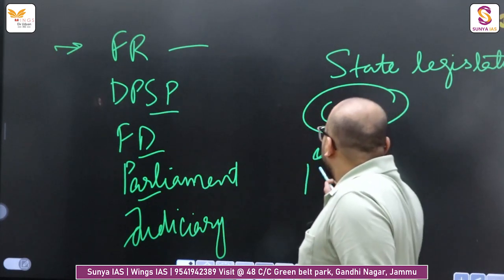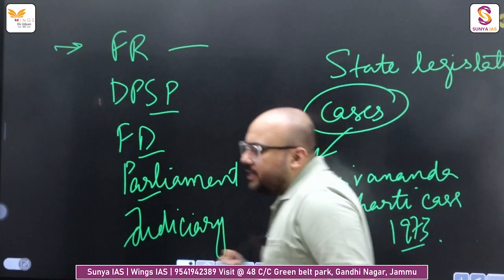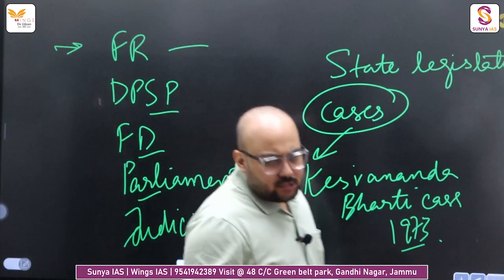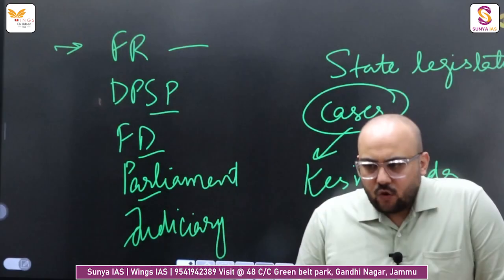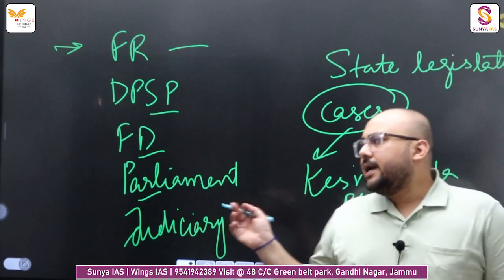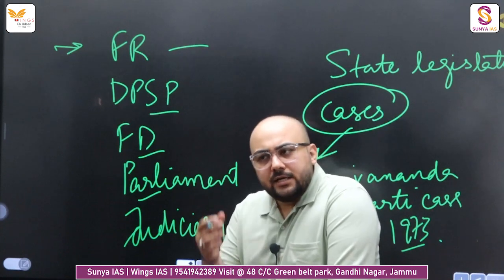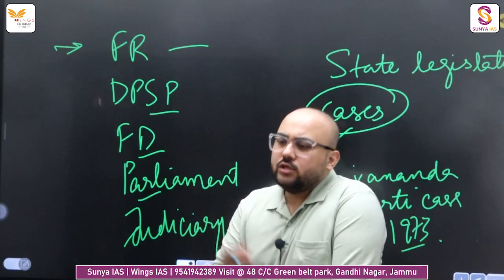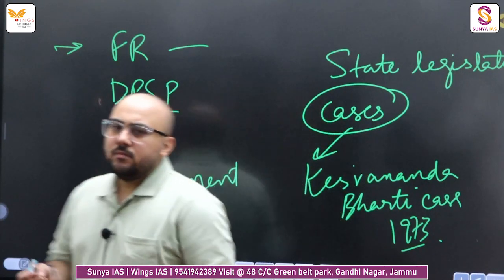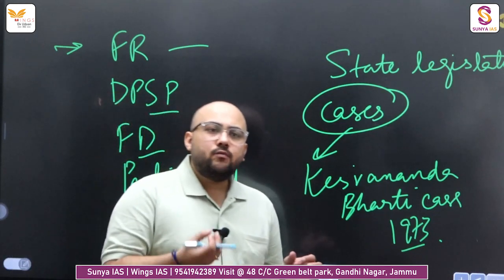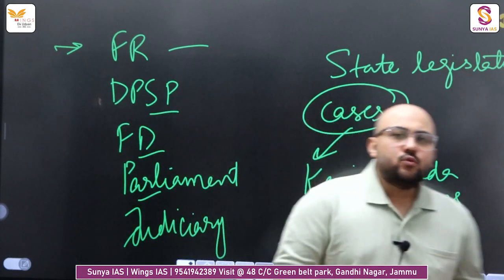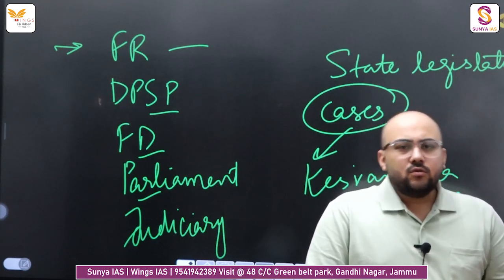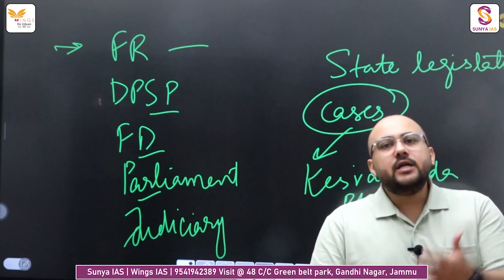The most important case is the Keshavananda Bharati vs State of Kerala, 1973, which talks about the basic structure of the constitution. The basic structure doctrine is important to understand because on its basis you can understand what is judicial activism and what is judicial misadventurism. Whether the basic structure doctrine was a positive judicial activism or negative — whether it was a blessing in disguise or not — these are the things you need to understand while studying polity.